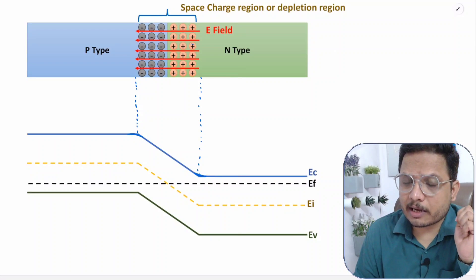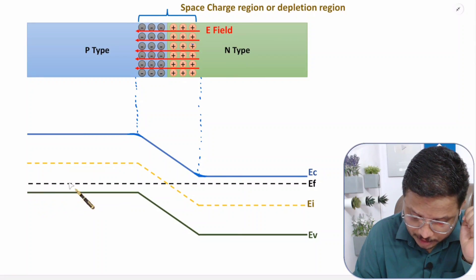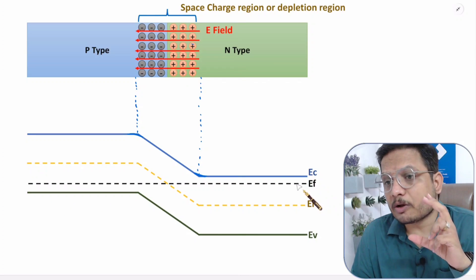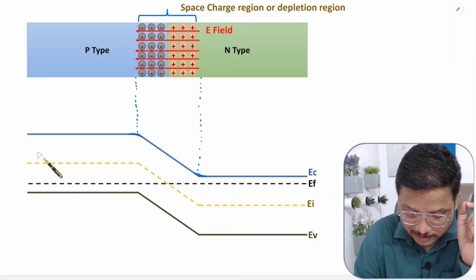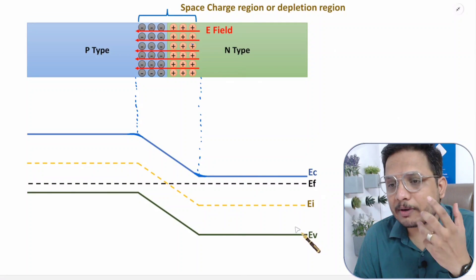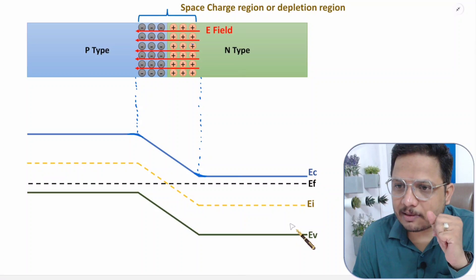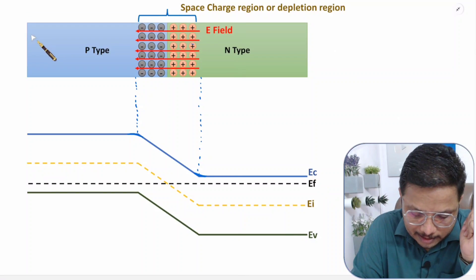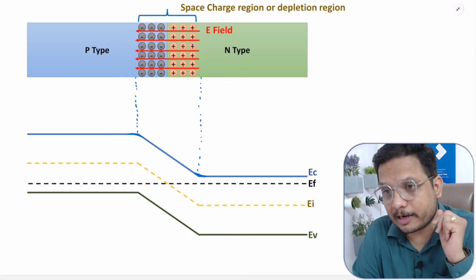If you observe, this Fermi energy level is constant throughout this P-N junction energy band diagram. You might be thinking how it could be constant. Fermi energy level will be constant because in this P-N junction there is no flow of current.